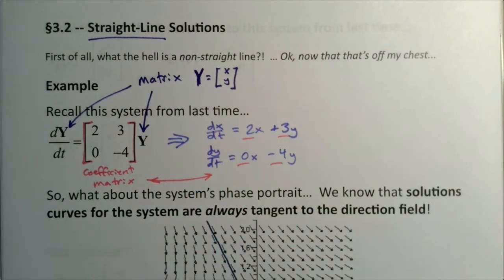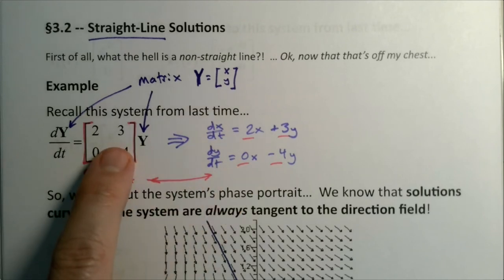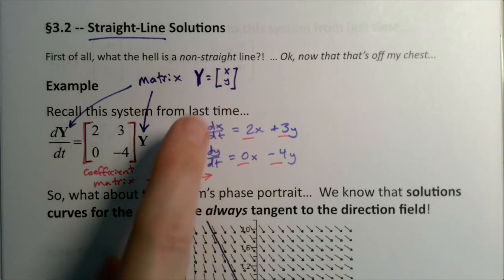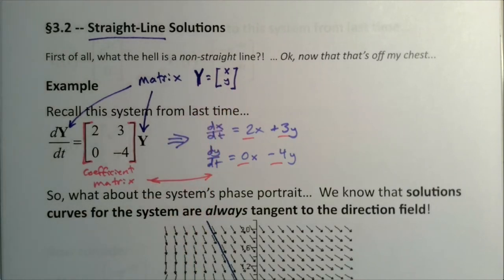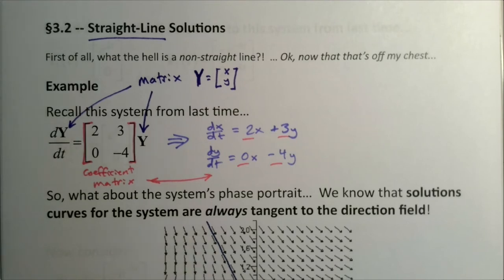With dx/dt equal to 2 times x plus 3 times y, and dy/dt equal to 0 times x minus 4 times y. You can see where that coefficient matrix comes from - it's really just the parameters, these values right here. All of this is kind of review stuff, but what does that mean about the system's phase portrait?